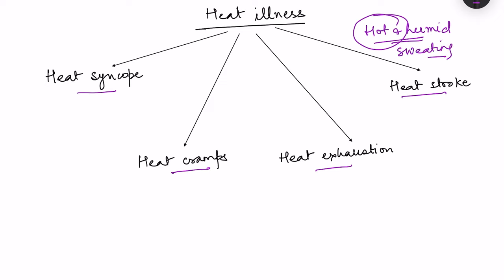When the environment is greater than 37 degrees Celsius — say 40 degrees Celsius — instead of losing heat by the physical mechanisms of radiation and conduction, the body will start gaining heat by means of radiation. So the only mechanism left for the body to lose heat is sweating, and because of this, the various heat illnesses result.